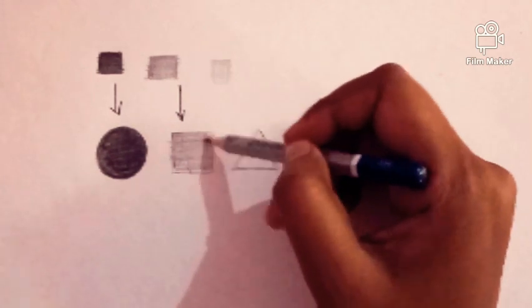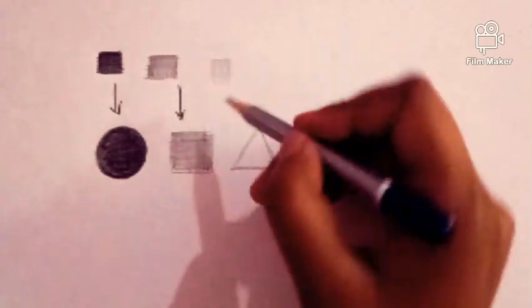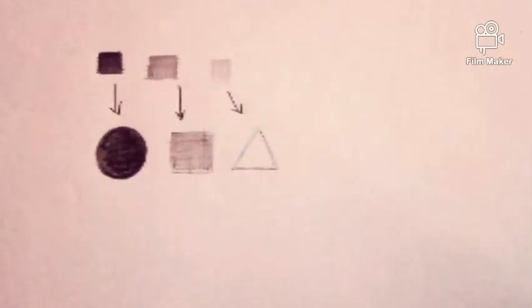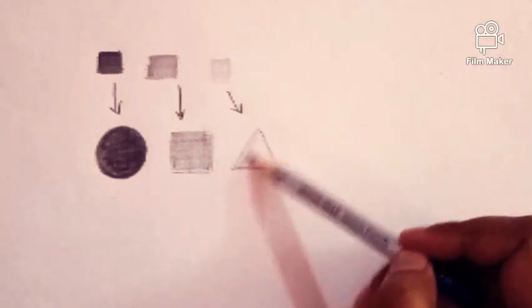Rub your pencil clearly. You can see the difference between dark tone and middle tone. Now we will do light tone. So here you have to hold your pencil at the end and softly rub your pencil.